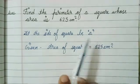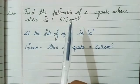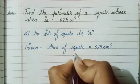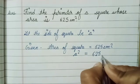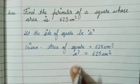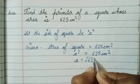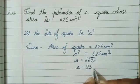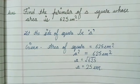With the help of the given area, we can find the value of a, which is the side. As we know, a squared equals 625 centimeter square, so a equals the square root of 625, which gives us a equals 25 centimeters. This is the side of the square.